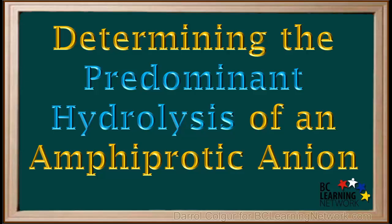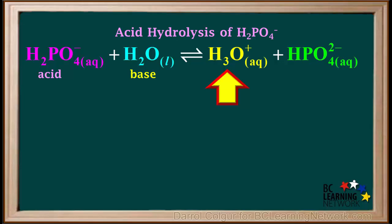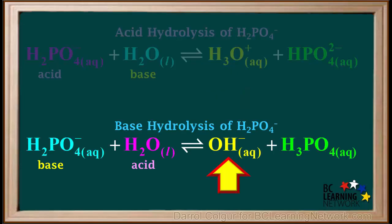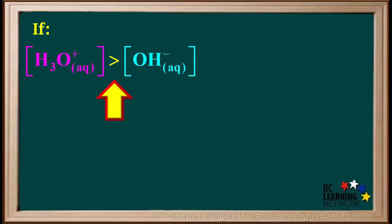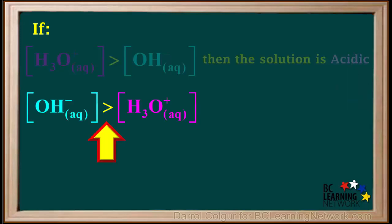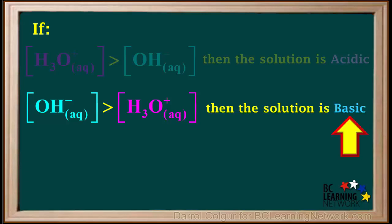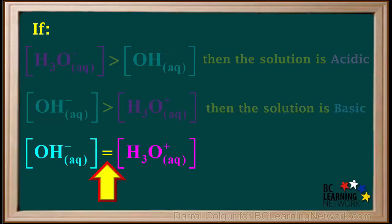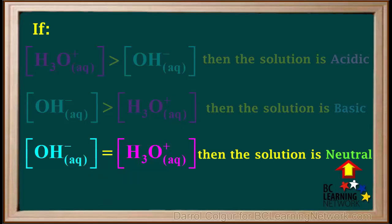In order to find out whether an amphiprotic anion makes a solution acidic or basic, we have to determine which is predominant — acid hydrolysis or base hydrolysis. The acid hydrolysis of dihydrogen phosphate produces hydronium ions in solution, and the base hydrolysis produces hydroxide ions. Both reactions take place when dihydrogen phosphate is in solution. If the hydronium ion concentration is greater than the hydroxide ion concentration, the solution is acidic. If the hydroxide ion concentration is greater, the solution is basic. And if they are equal, the solution is neutral.